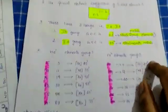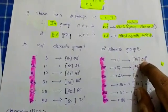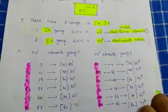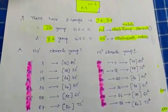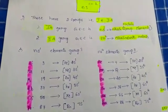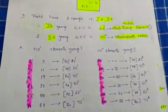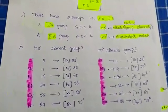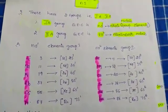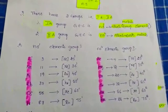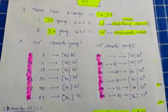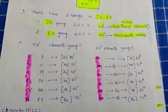NS2 elements of group 2A range from beryllium to radium. Beryllium has atomic number 4, configuration [He] 2S2. Magnesium has atomic number 12, configuration [Ne] 3S2. Calcium has atomic number 20, configuration [Ar] 4S2. Strontium has atomic number 38, configuration [Kr] 5S2. Barium has atomic number 56, configuration [Xe] 6S2. Radium has atomic number 88, configuration [Rn] 7S2. These are alkaline earth metals.